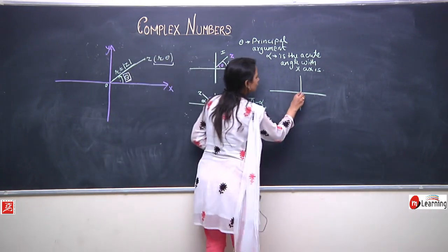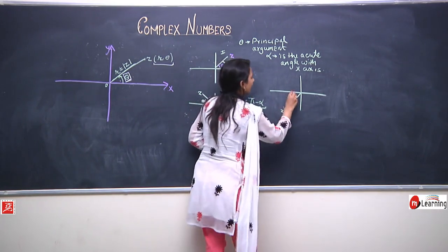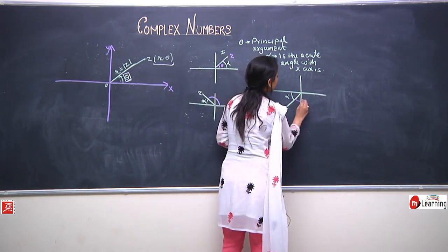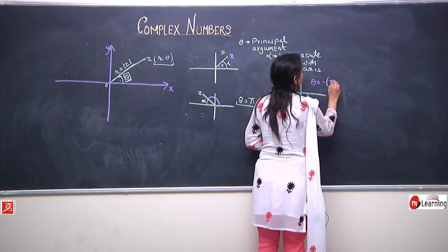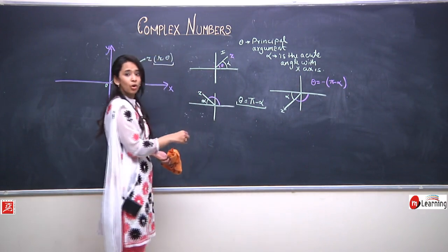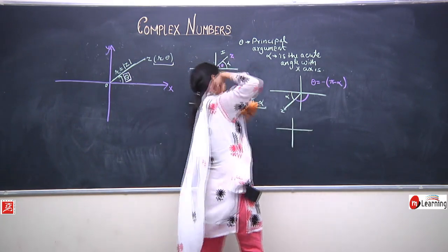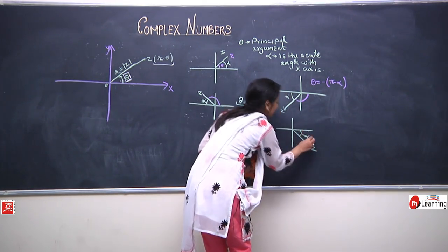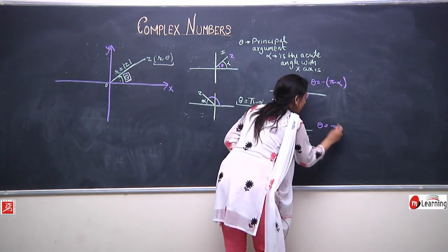If the complex number lies in the third quadrant, the acute angle with the x-axis would be alpha, and the principal argument theta would be minus of pi minus alpha, that is -(π - α). And if the complex number lies in the fourth quadrant, the acute angle alpha gives a principal argument equal to minus alpha.